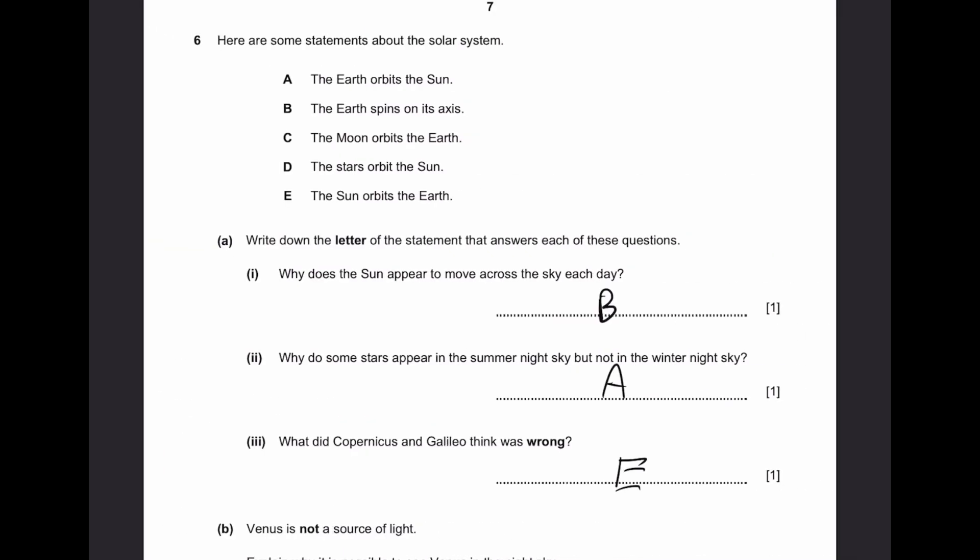Question 6. Here are some statements about the solar system. Part A. Write down the letter of the statement that answers each question. Why does the sun appear to move across the sky each day? The answer is B. Because the earth spins on its axis. The earth rotates, not the sun.